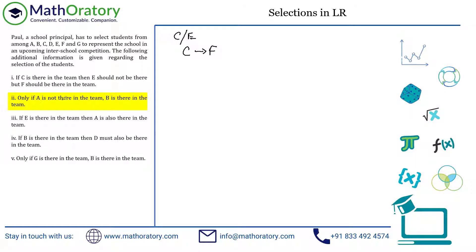The second condition says: only if A is not there in the team, B is there in the team. So if A is there, then B cannot be there, and vice versa. Effectively we use A slash B again. It is not stated that any one of them must be selected, so I won't put the bracket. This is the only thing mentioned in the second condition.